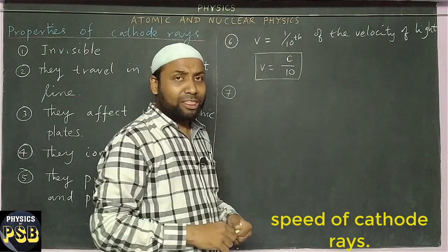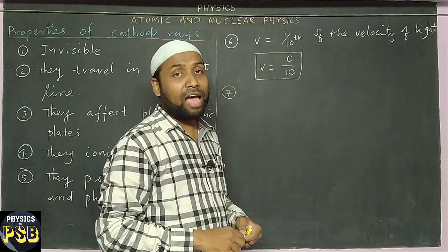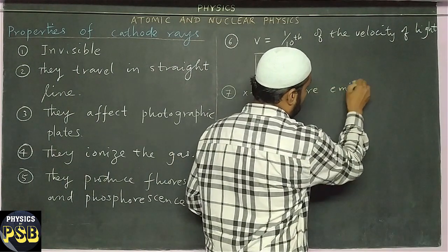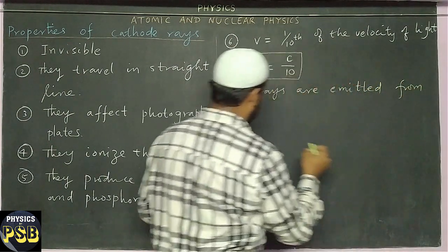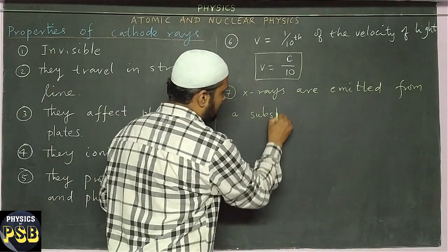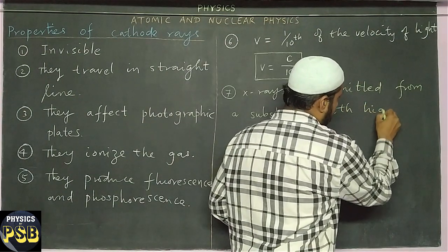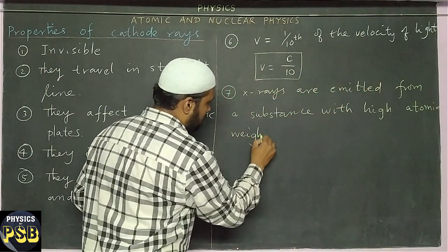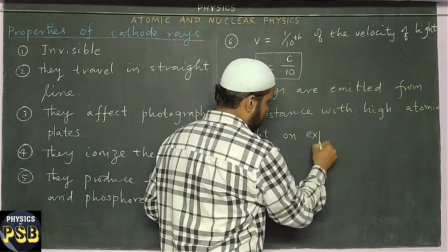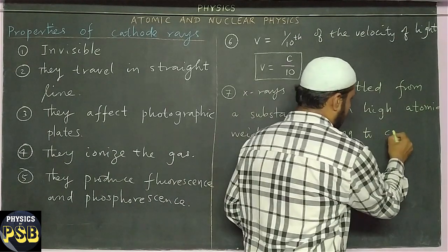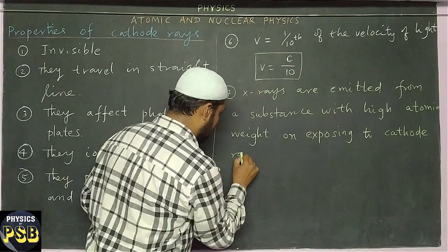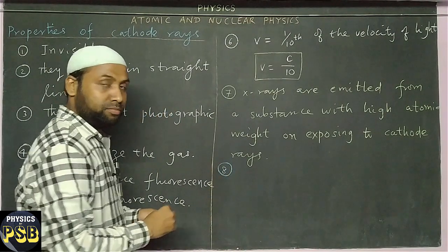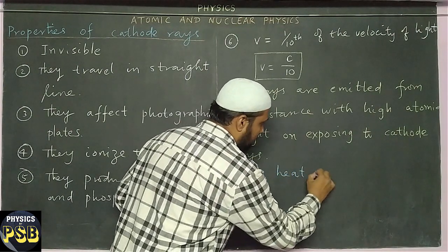It is observed that when cathode rays fall on certain substances which have high atomic weight, they emit out X-rays. Also, it is observed that they heat an object when they are made to fall on it — they heat the object.